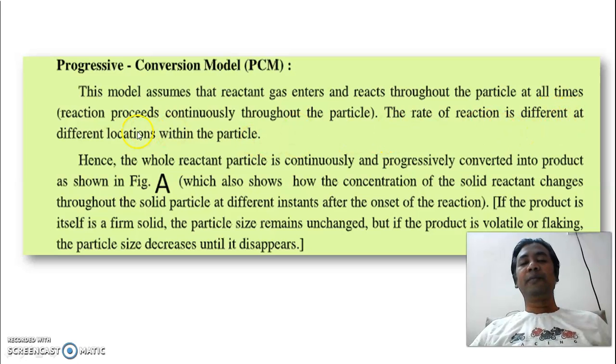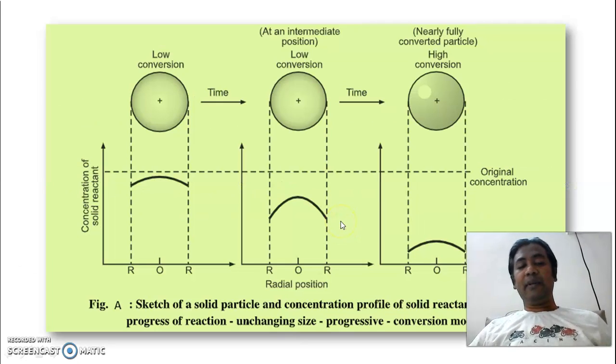So, tell me how you can make a kinetic model if reaction is different at different location. That is my question. Now, figure A, I have explained already that how this model works.